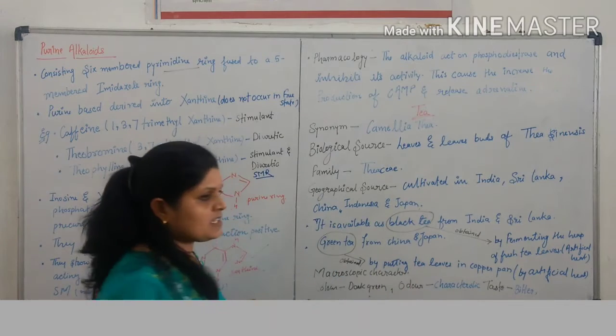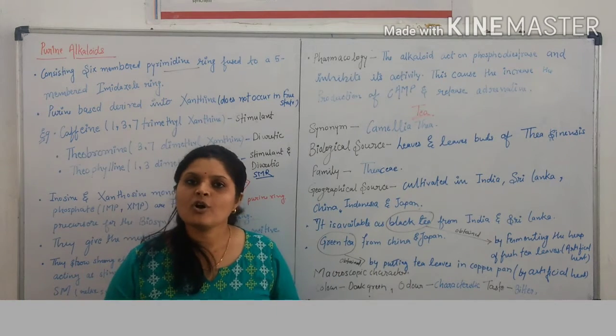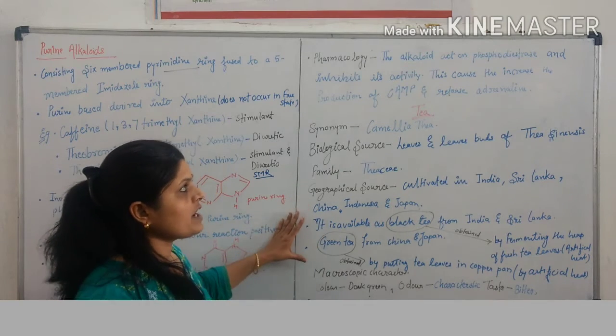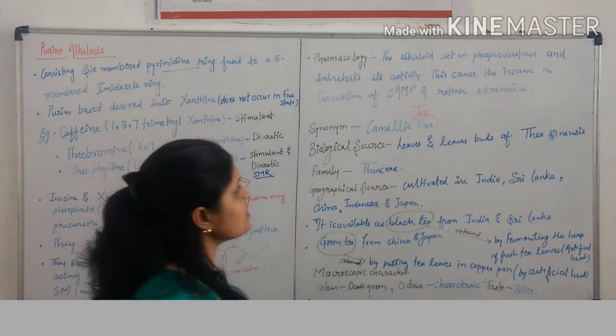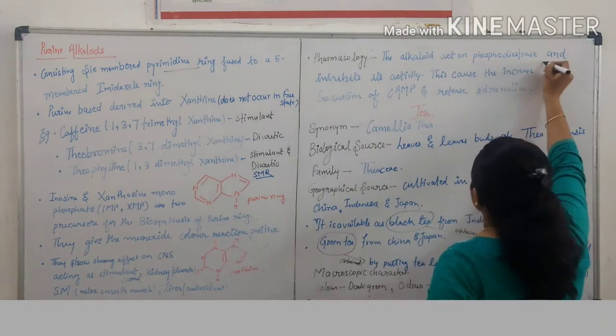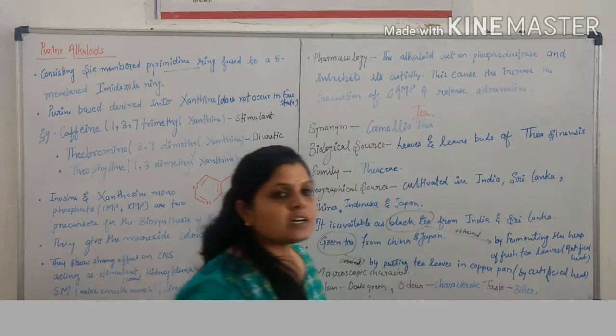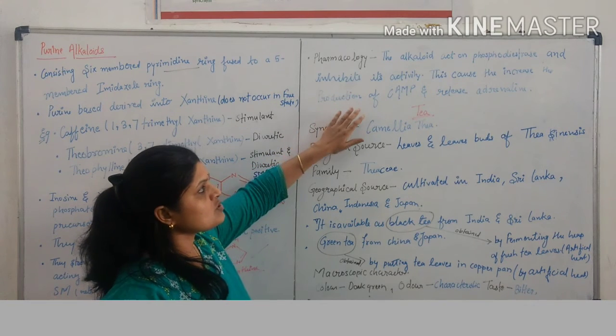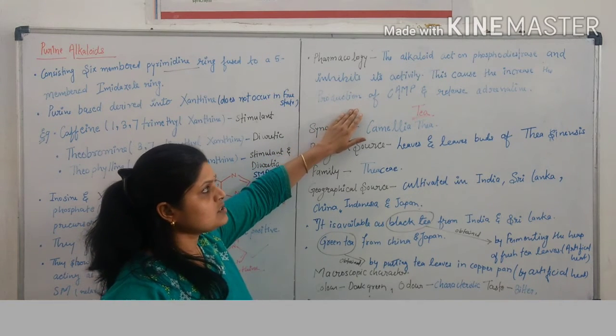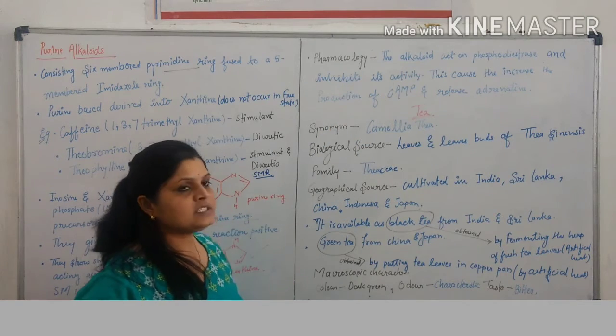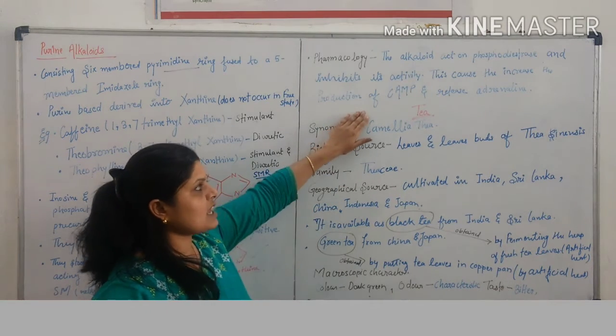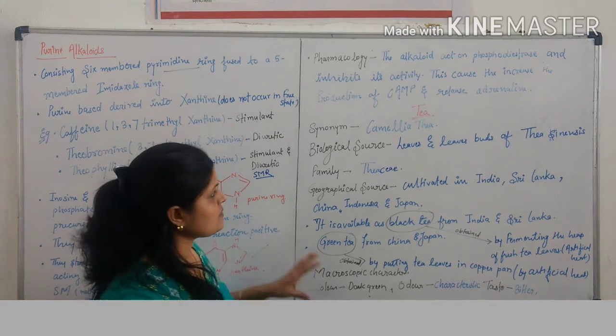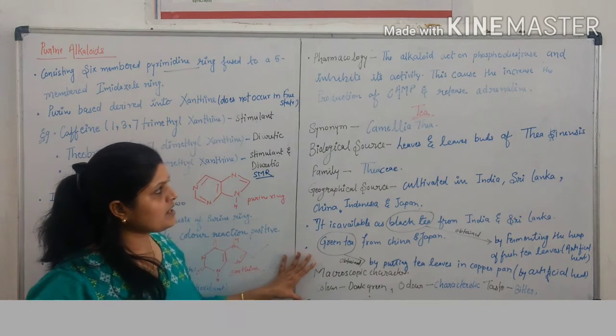The pharmacology of purine alkaloids: purine alkaloids act on phosphodiesterase enzyme and inhibit its activity. This causes increased production of cyclic AMP and release of adrenaline.